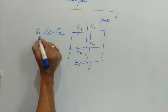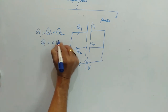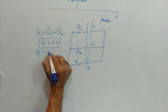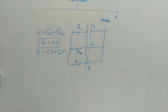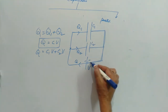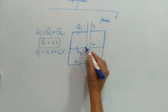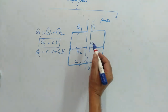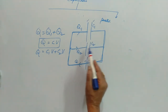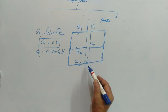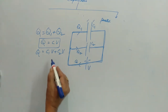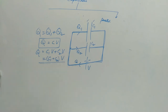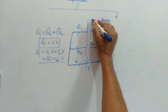Using Q = CV, we can write Q = C1·V + C2·V, because both capacitors are connected across the same cell. Therefore the potential difference across the plates of the first capacitor as well as across the second capacitor is the same, and equal to the potential difference V across the cell terminals. Taking V as common: Q = (C1 + C2)·V.